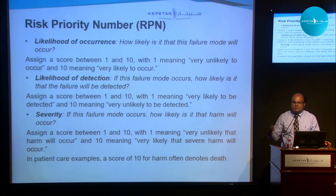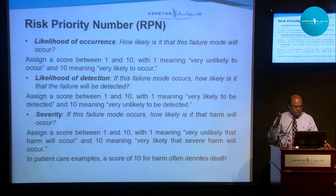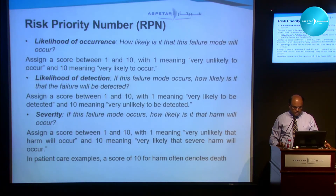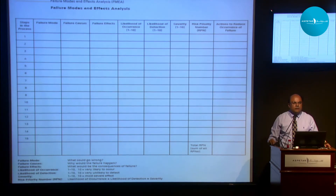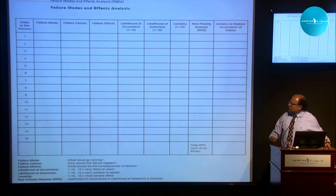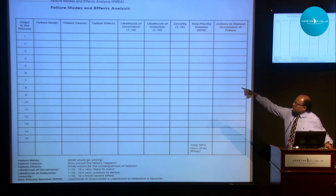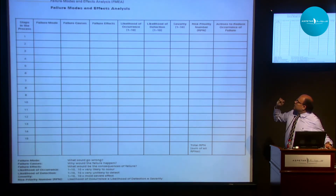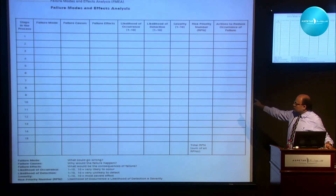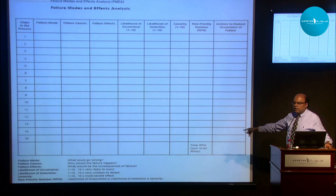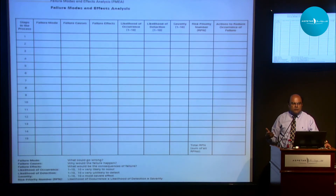Resuming the presentation: likelihood of occurrence is rated one to ten, one being highly unlikely and ten very likely. Detection and severity are also rated one to ten. The Institute for Healthcare Improvement has proposed a nice matrix where you list all the steps in the process on the left, then identify failure modes, causes, effects, likelihood, detection, severity, and the Risk Priority Number, along with actions to prevent the failure. You can also sum all risk priority numbers to review the process and make improvements on a regular basis.